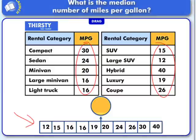The next thing we want to do is find the median value of all the data — we want to find that middle number. The middle number of all this data would be the average of these two numbers, and the average of these two numbers would be 19.5. So the median car gets 19.5 miles per gallon.